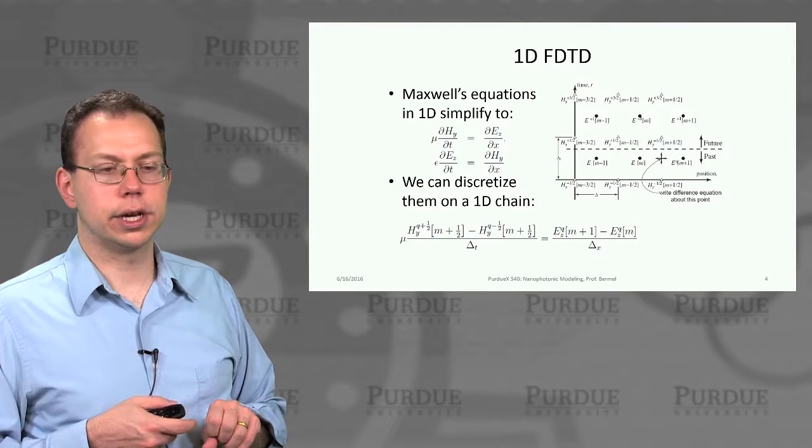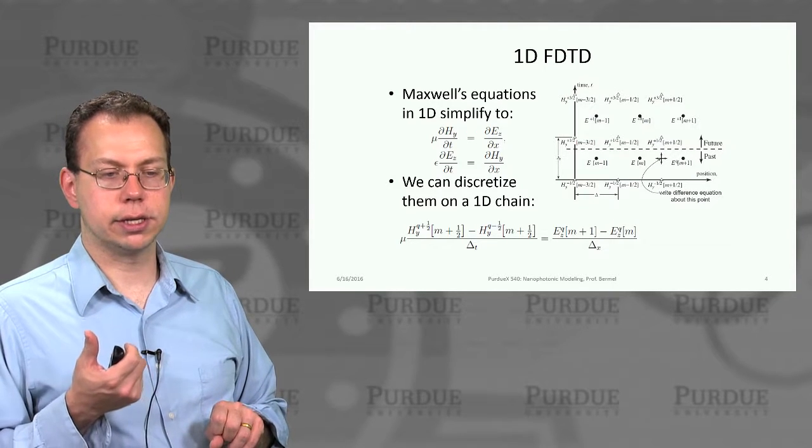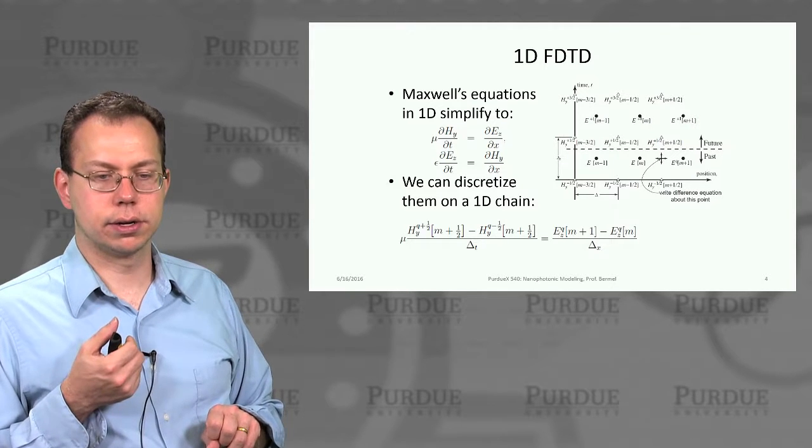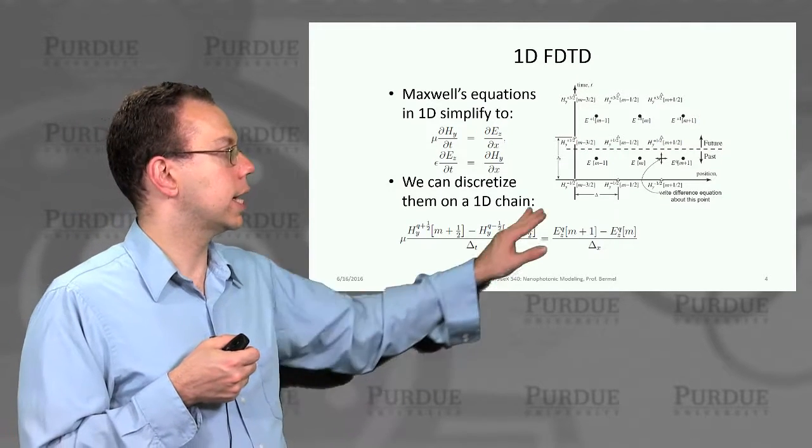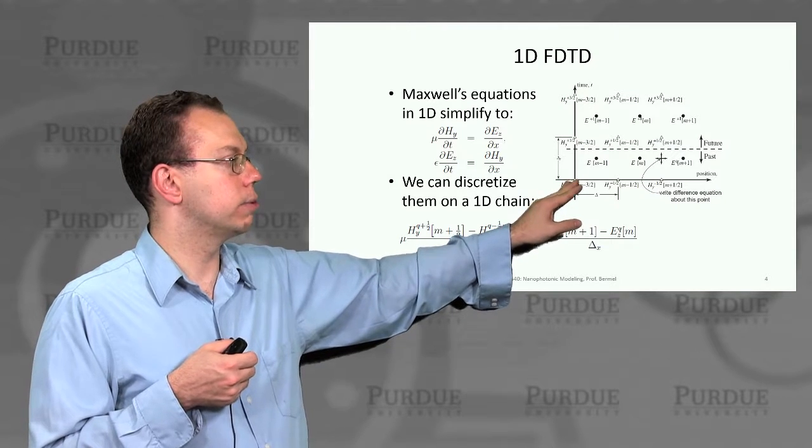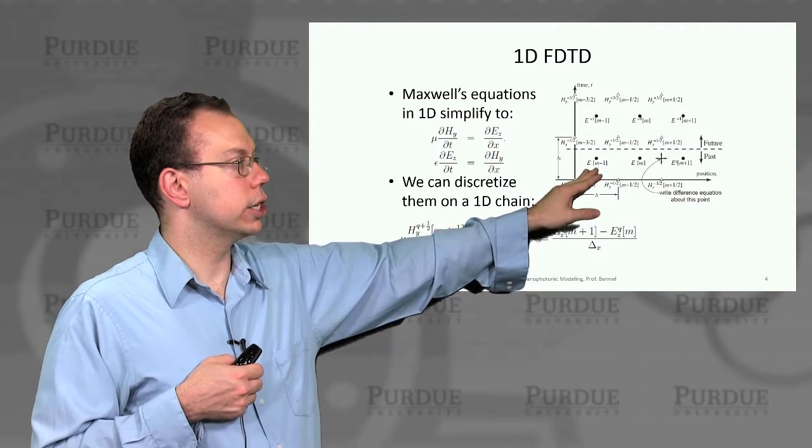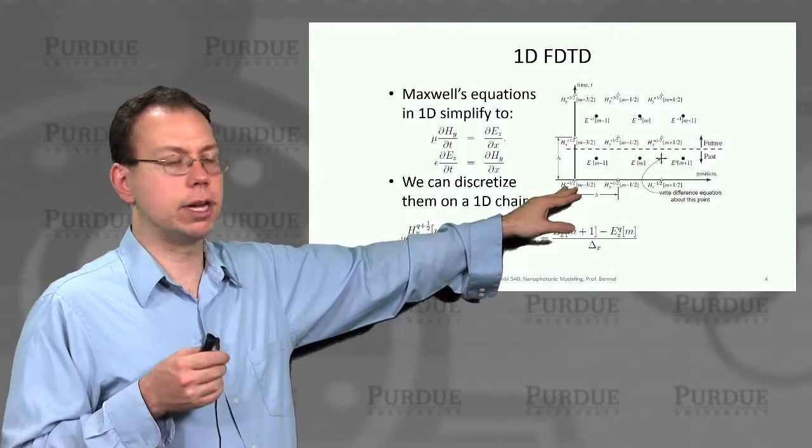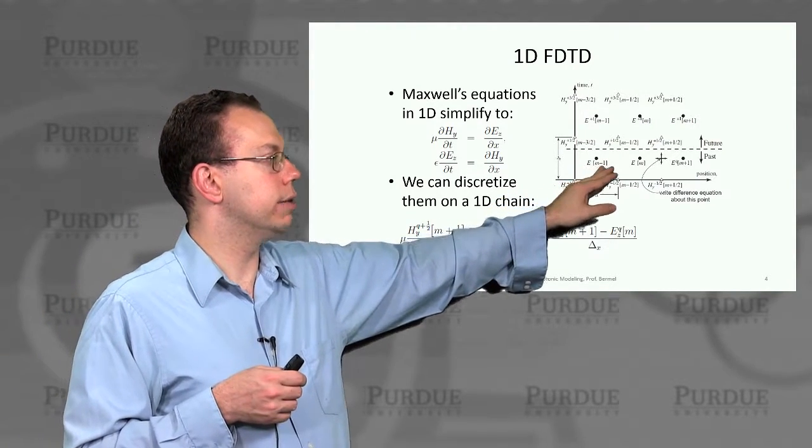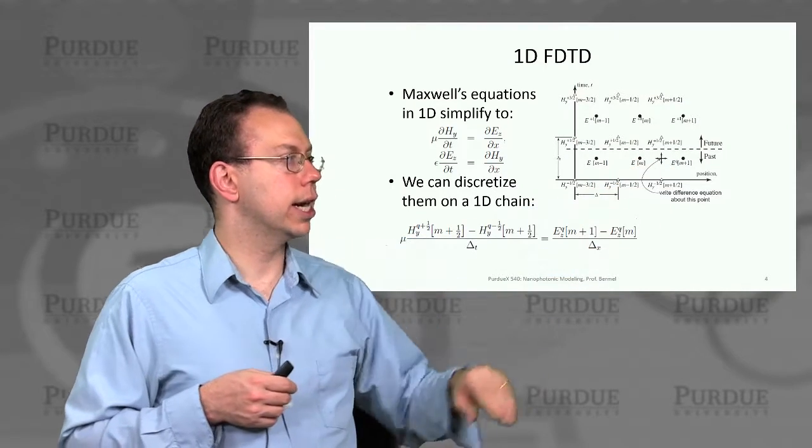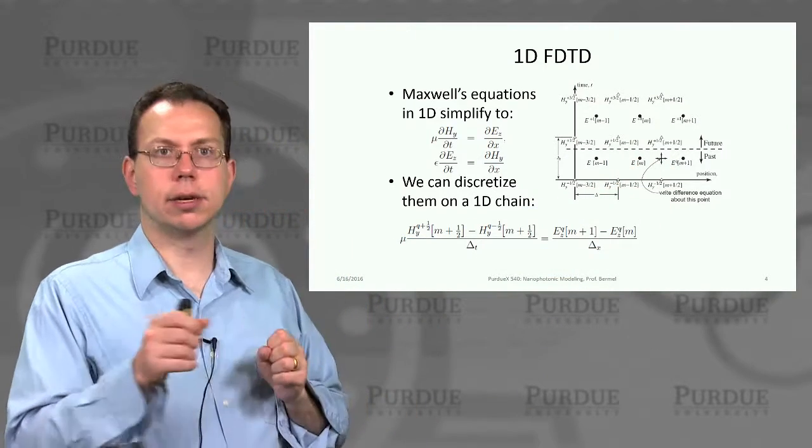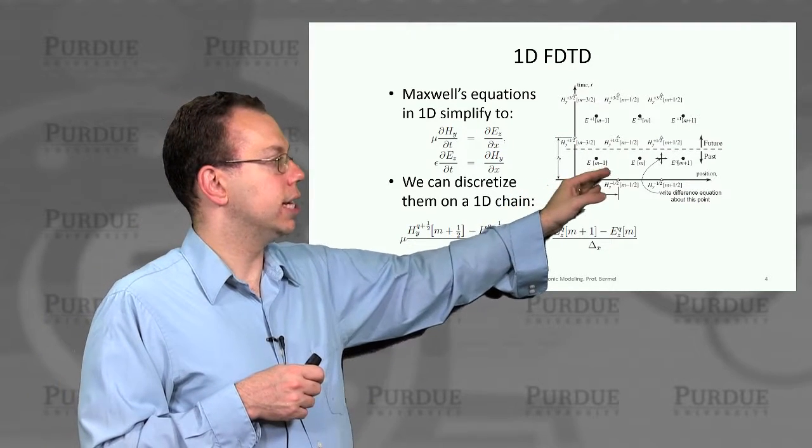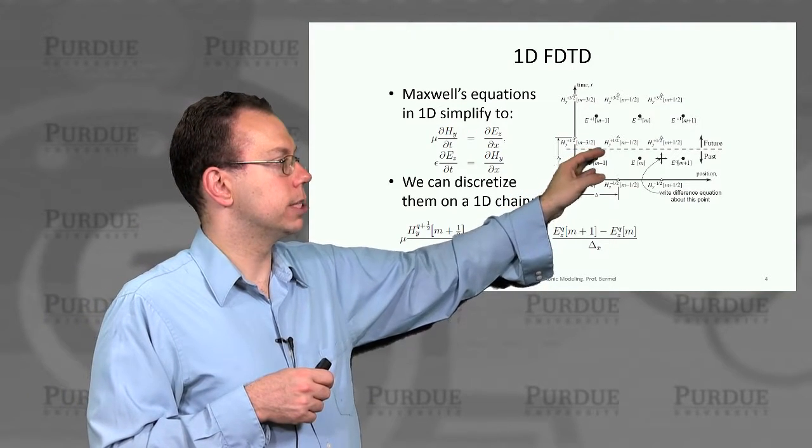So you could imagine that you could take the E fields and H fields and then discretize them on a 1D chain, okay? And so this is actually showing how you can represent everything. It's essentially the 1D Yee lattice, but with time also plotted here, right? And so you have basically the E fields at these discretized points along the position axis, right? Remember it's 1D.